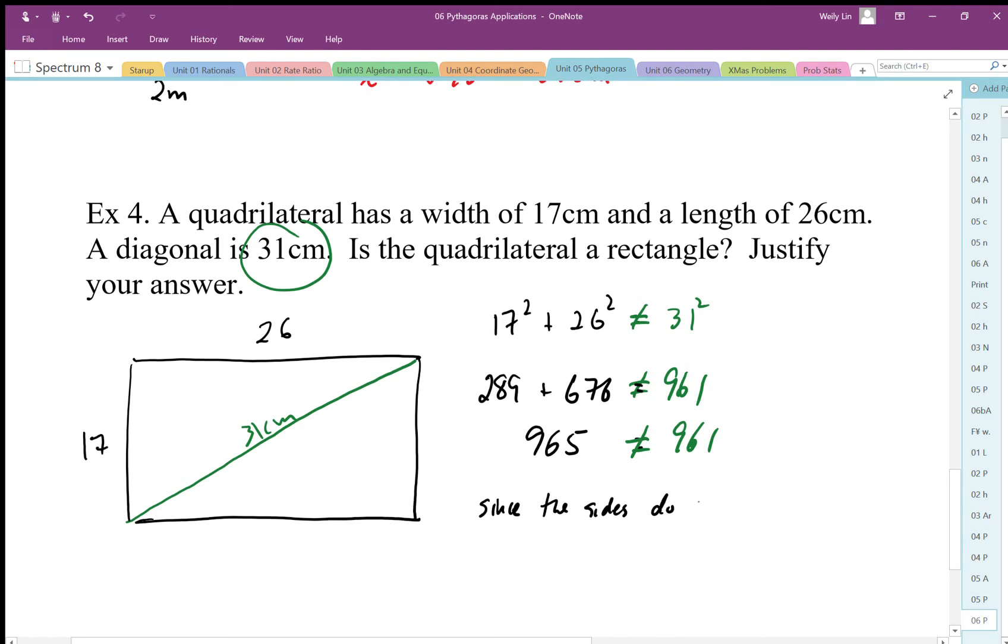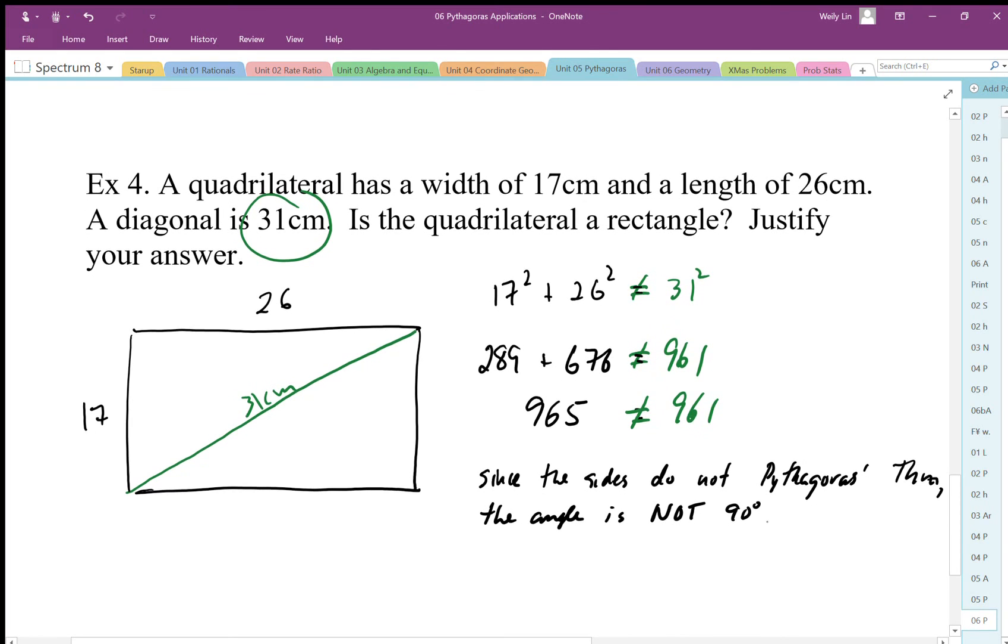Since the sides do not follow Pythagorean theorem, the angle is not 90 degrees, therefore not a rectangle.